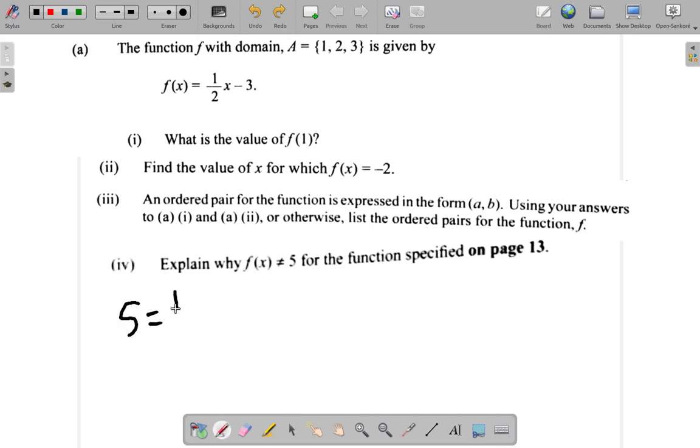5 is equal to half x minus 3. Now, if I want to find x, I could add 3 to both sides. Let me make some space with the 5. So, 5 is equal to that. Add 3 to both sides to get rid of the 3.